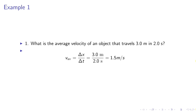We have v average equals delta x over delta t equals 3.0 meters divided by 2.0 seconds. This is 1.5 meters per second.